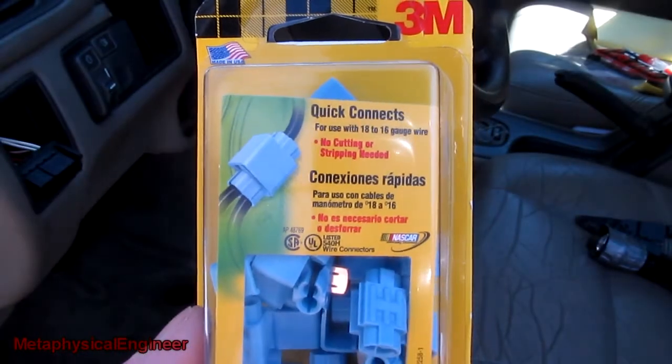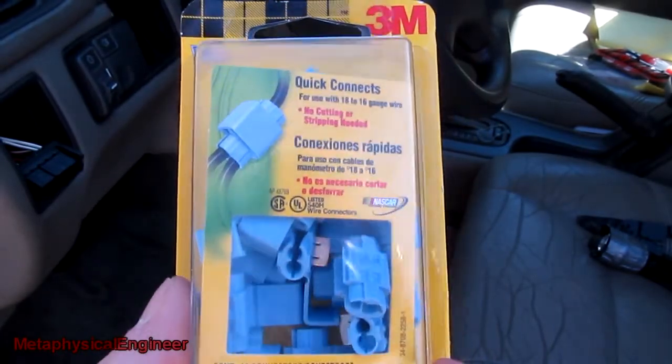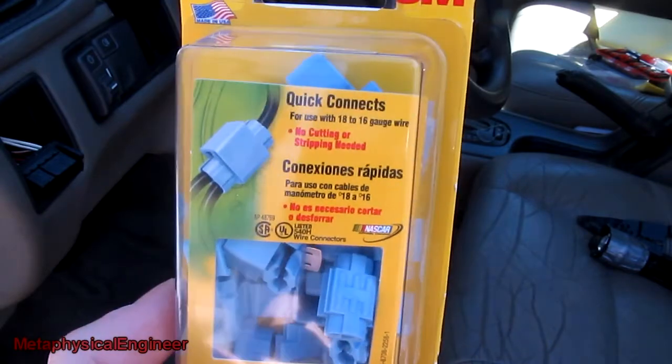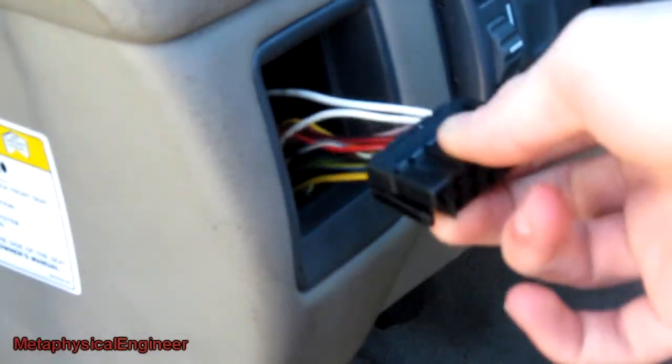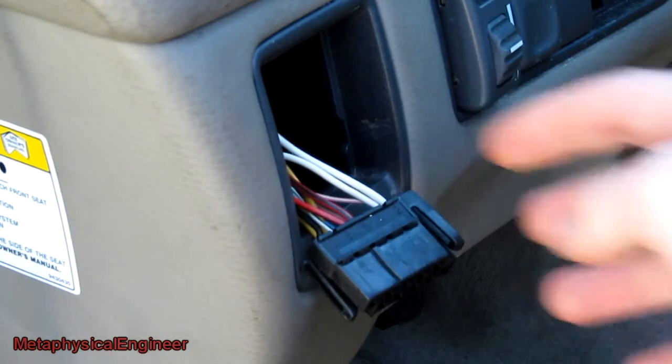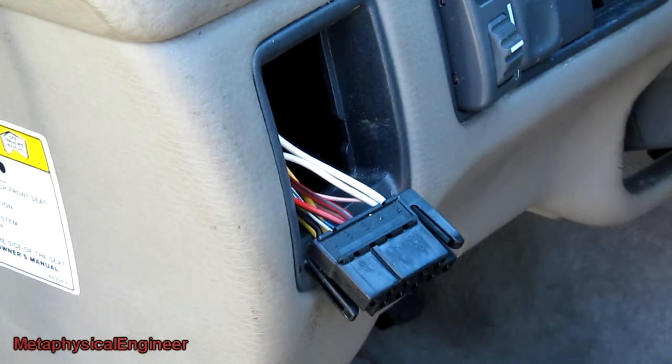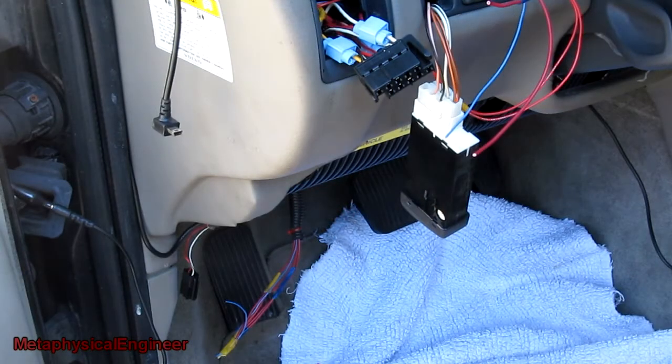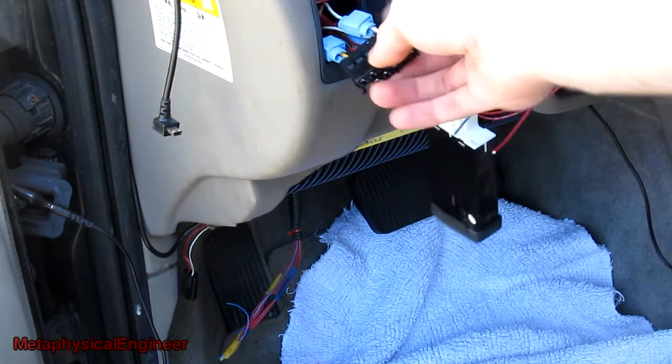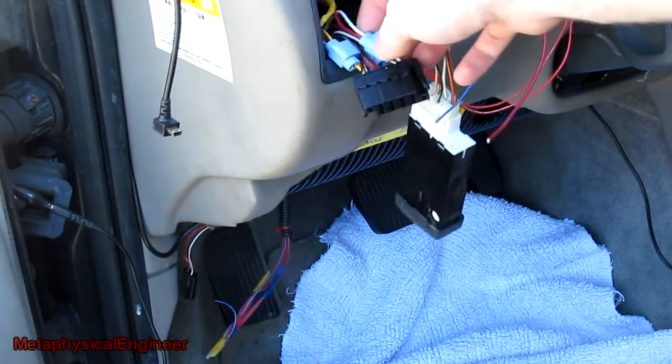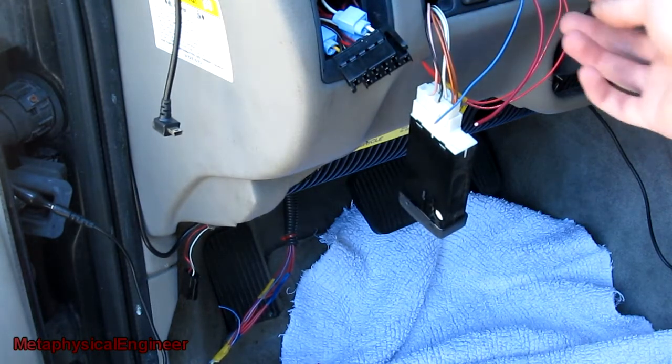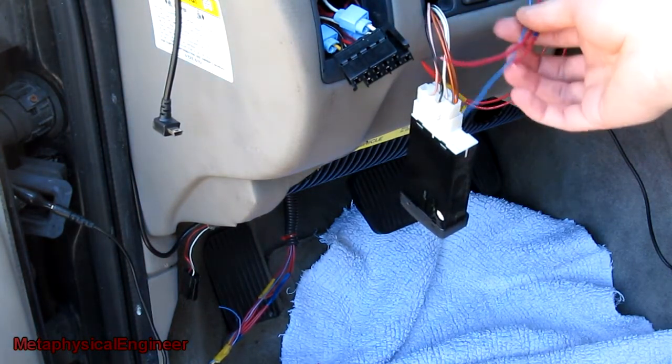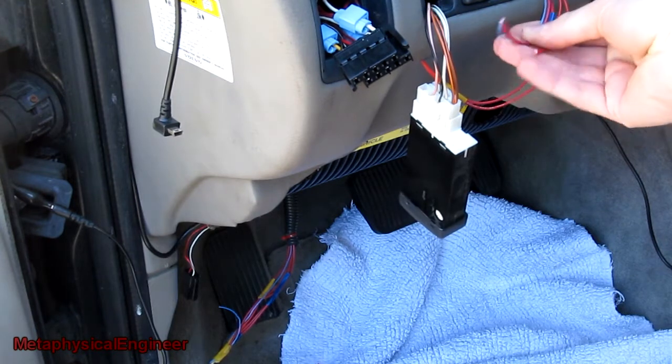While I normally don't like this kind of quick connect, I will make an exception here, because these are relatively low power relay control wires. Another reason to use them is there is very little slack in this harness, and I do not want to have to take the entire dashboard apart just to get this install done. Got the wires all set up with their conduit running from here all the way down into the footwell. You can see it flopping around down there.